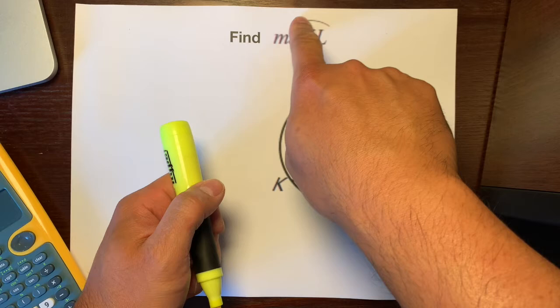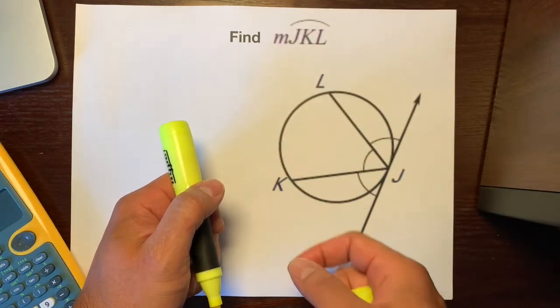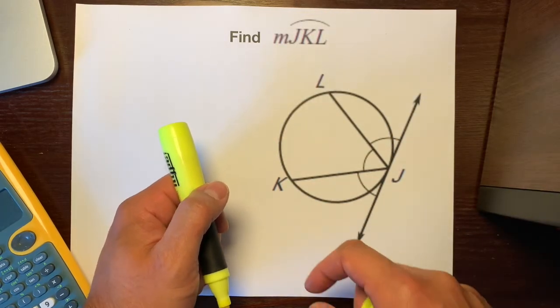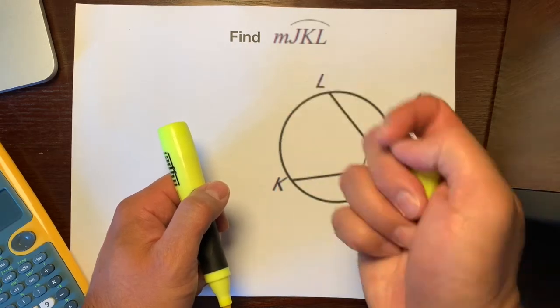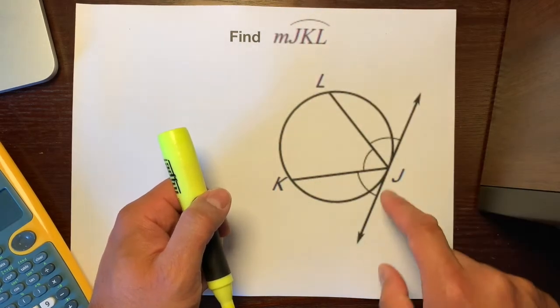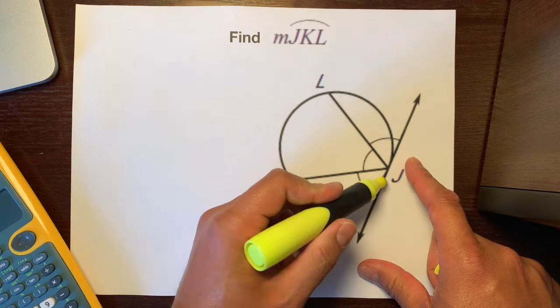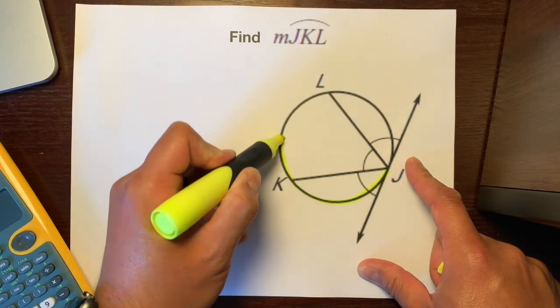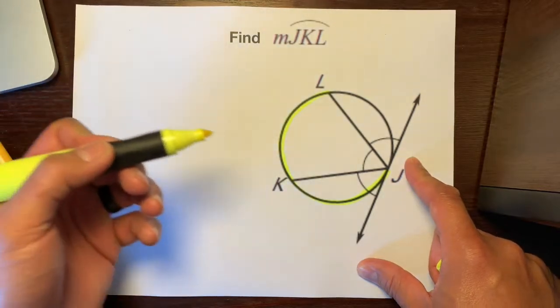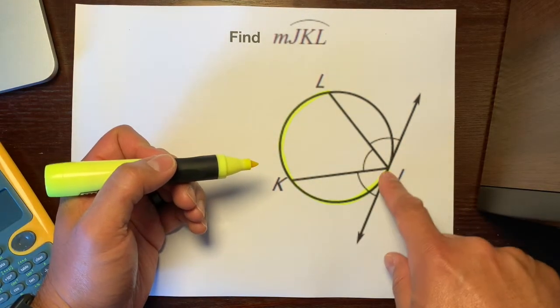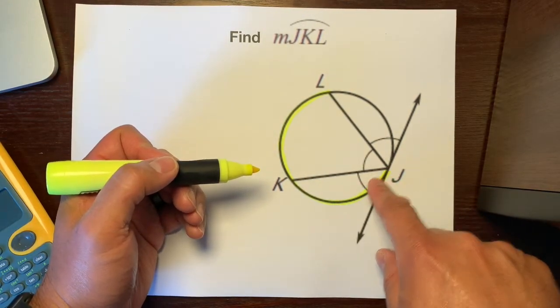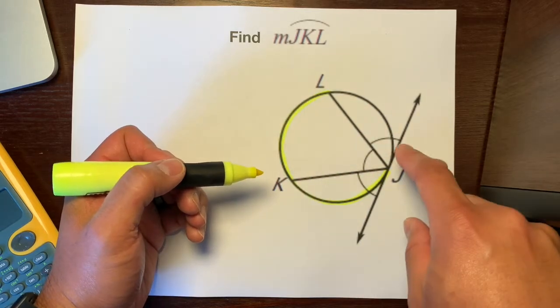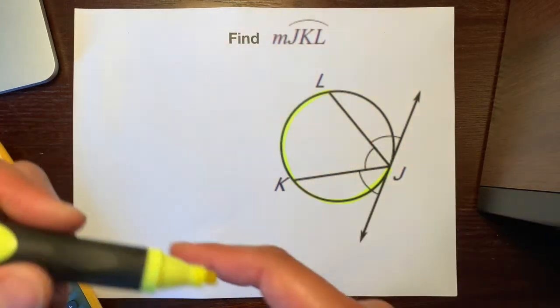So remember, this symbol right here is arc not angle. So we're going to highlight the arc JKL. So from here we'll highlight J to K to L. So our job is to figure out how many degrees is it from here all the way to here. What's that rotation from here to here?